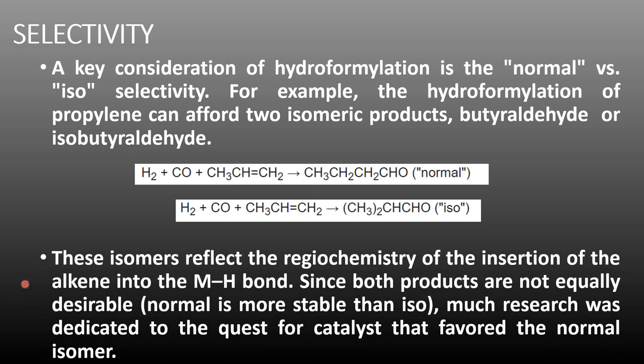These isomers reflect the regiochemistry of the insertion of the alkene into the metal-hydrogen bond. Since both products are not equally desirable, normal is more stable than iso, so much research was dedicated to the quest for catalysts that favored the normal isomer.